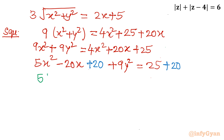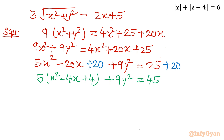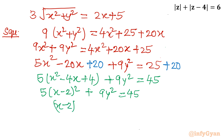Taking 5 as a common factor from the first three terms: 5 times x squared minus 4x plus 4 plus 9y squared equals 45. This gives 5 times x minus 2 whole squared plus 9y squared equals 45. Dividing throughout: x minus 2 whole squared over 9 plus y squared over 5 equals 1.